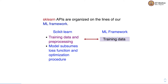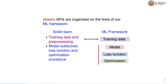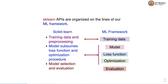The second component is the model, which helps us in actually training the machine learning model. The model subsumes the loss function and optimization procedures, corresponding to the model, loss function, and optimization components of the machine learning framework. The third component helps us in model selection and evaluation — cross-validation and hyperparameter tuning to find the best hyperparameters — and model evaluation provides metrics for measuring performance. This corresponds to the evaluation component. There is also an additional component for model inspection that helps us understand what exactly the model has learned.